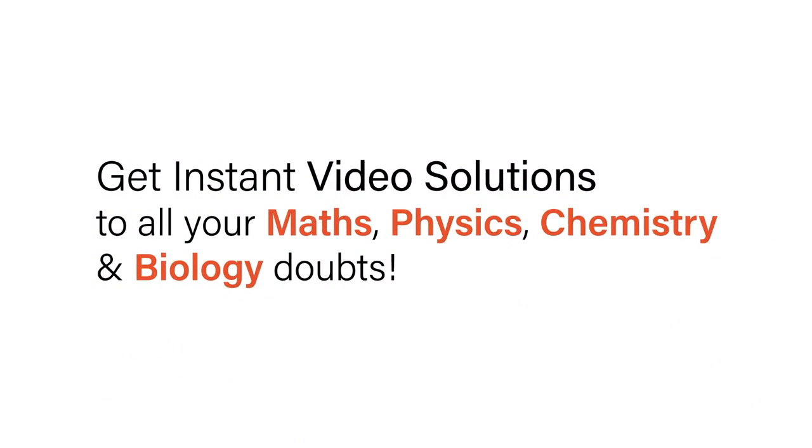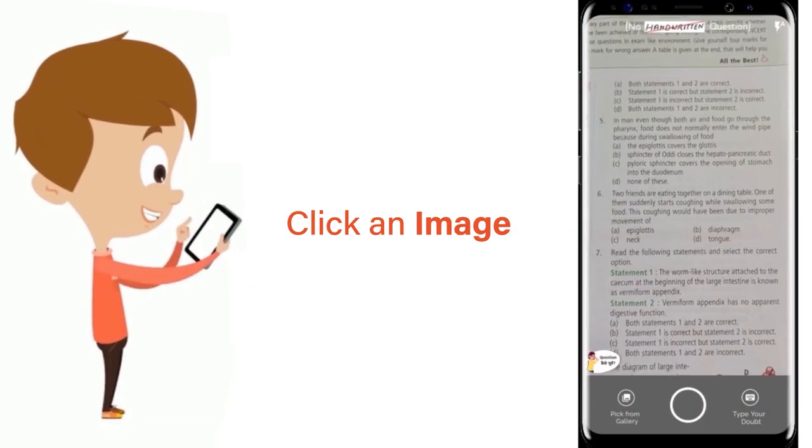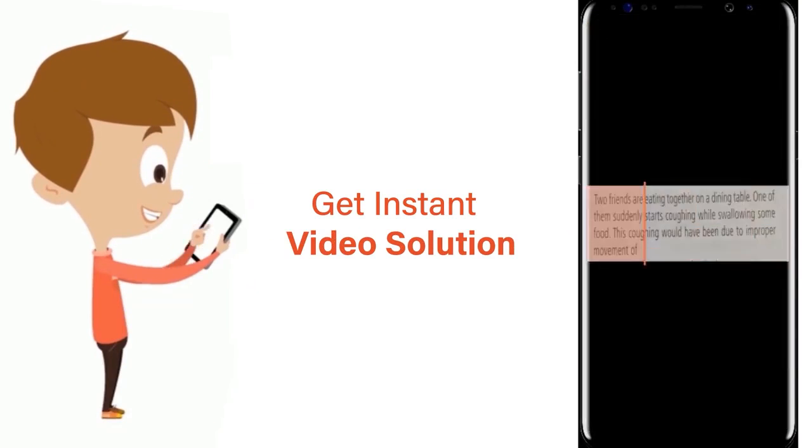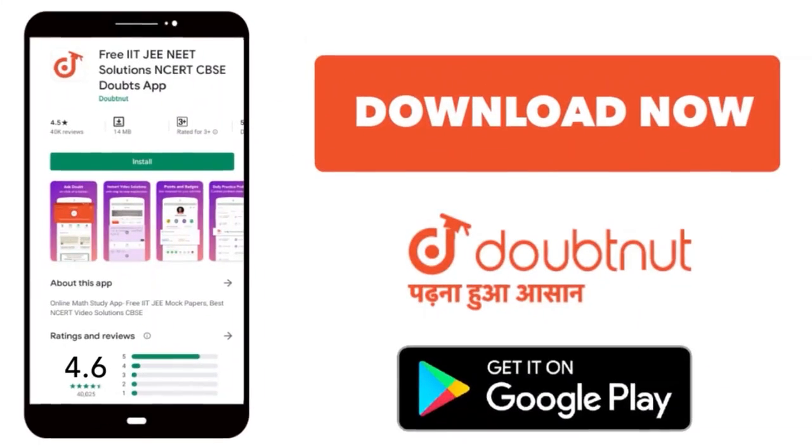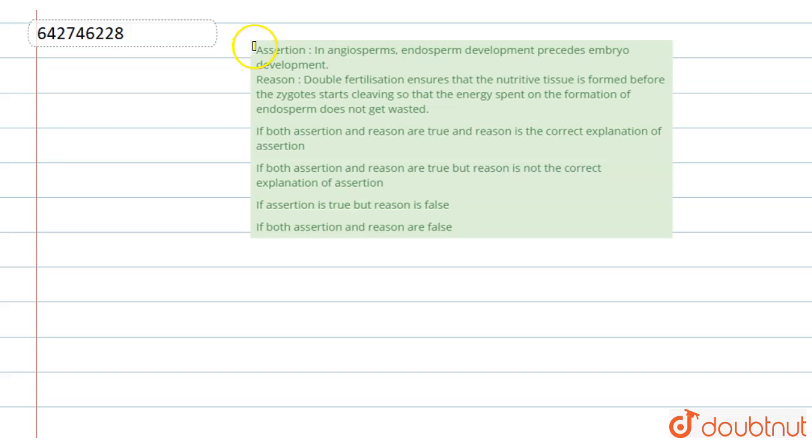With Doubtnet, get instant video solutions to all your maths, physics, chemistry, and biology doubts. Just click the image of the question, crop the question, and get instant video solution. Download Doubtnet app today. Hello, the question is: Assertion: In endosperm development precedes embryo development.